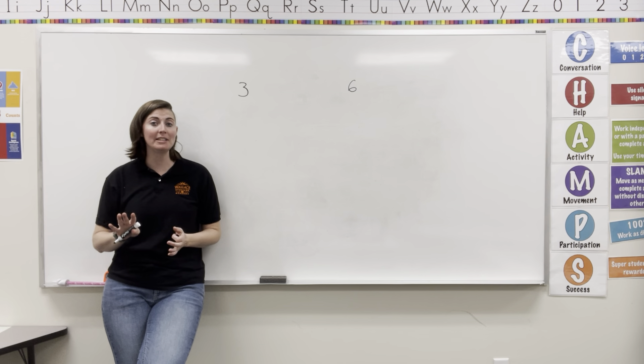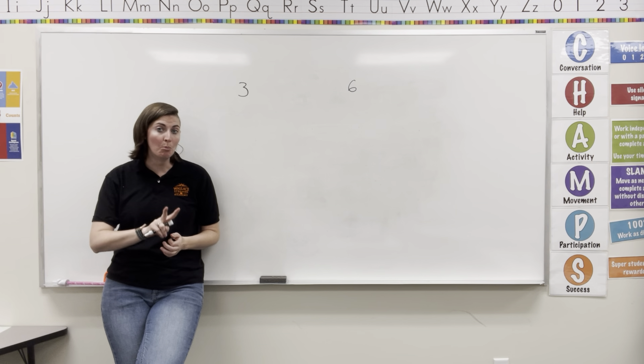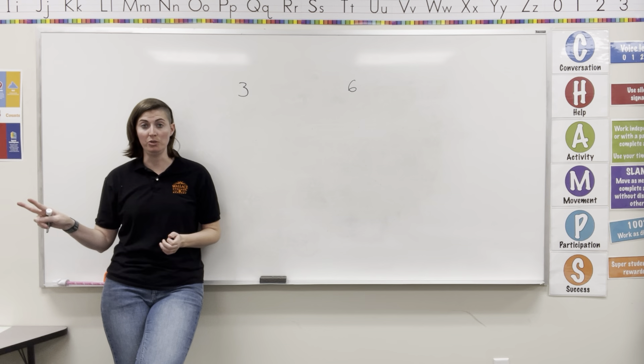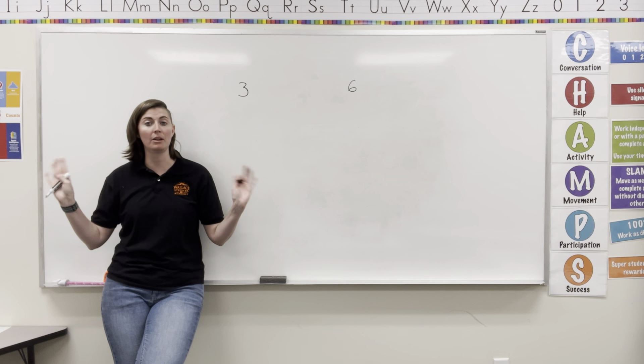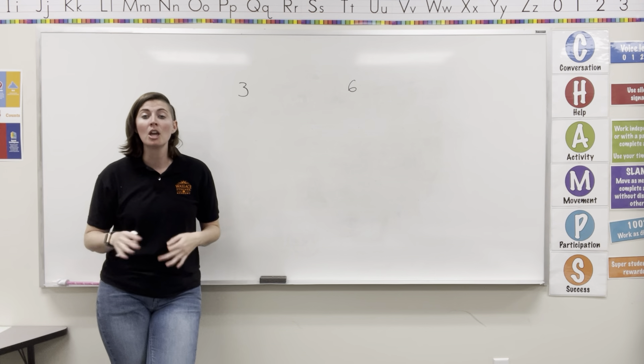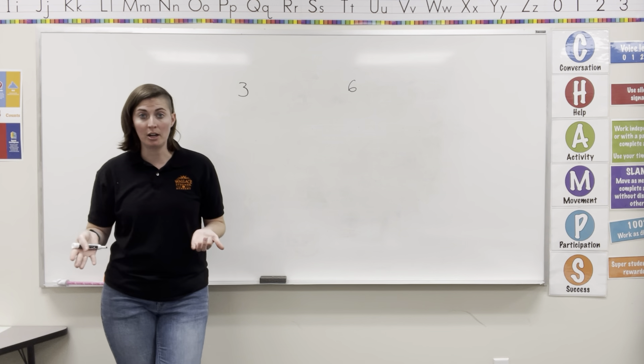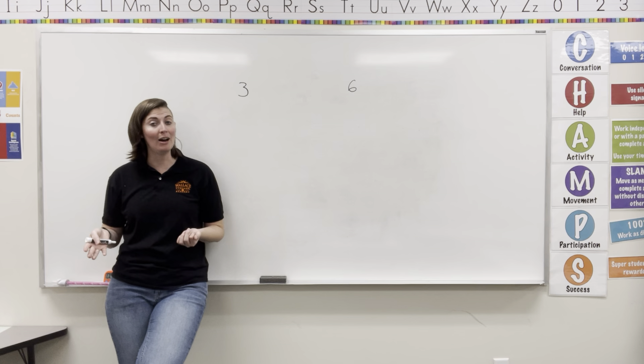Composite numbers will always have more than two factors — so they get 2, 3, 20, whatever it is. Those are composite numbers.